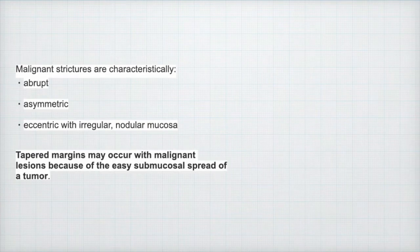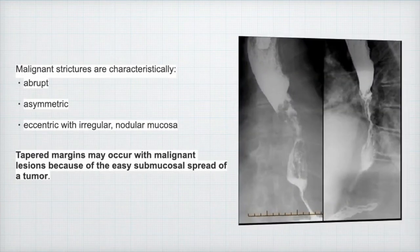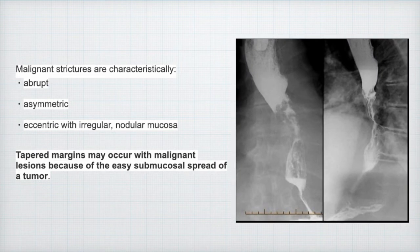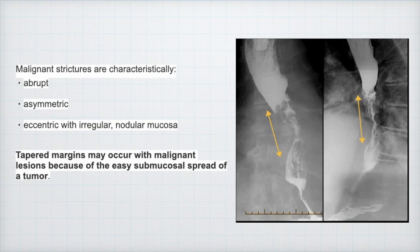For malignant strictures, they are abrupt, asymmetric and eccentric with irregular nodular mucosa. You have to know that shouldering margins may occur with malignant lesions because of the easy submucosal spread of the tumor. On your right, you can see a sample of this kind of disease.